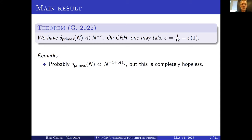What should probably be true? It should probably really be true that delta_primes(n) behaves almost like n^{-1}. In other words, as soon as you take a subset of {1,...,n} even of size n^{0.01}, which is tiny, there probably should be two elements in there that differ by p minus 1. But that seems to be a completely hopeless problem.